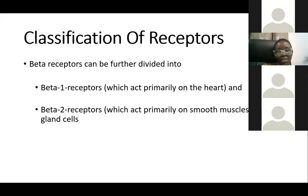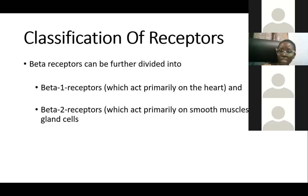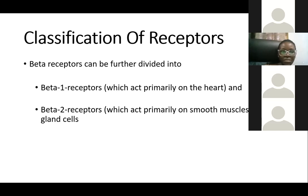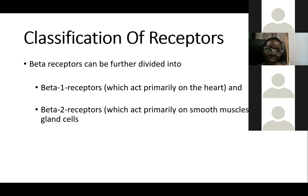If a medication is a beta-one receptor agonist, it mimics the action of beta-one receptors on the heart and causes an increase in heart rate. A beta-one receptor antagonist slows down the heart rate. A beta-two receptor agonist causes bronchodilation — an example is salbutamol, used in the management of asthma. Salbutamol dilates the bronchioles, relieving difficulty breathing.